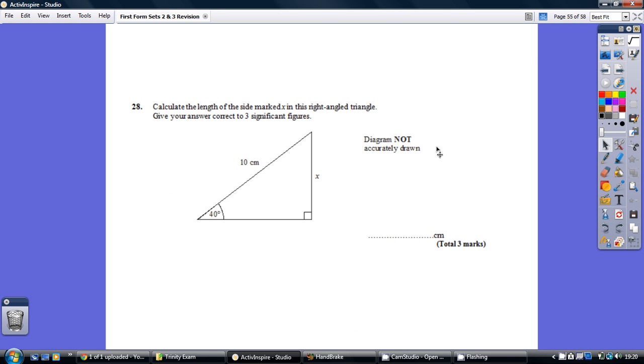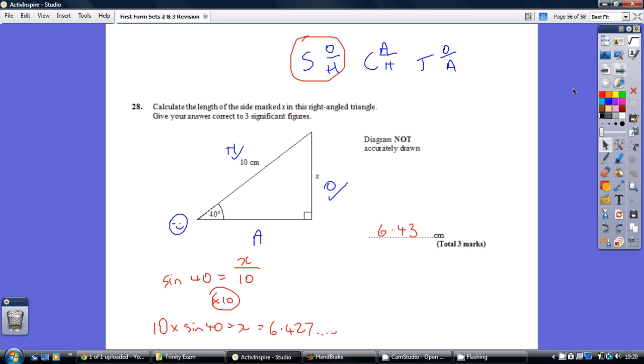Now for question 28, have a go. So this time it's a right-angled triangle but there are angles involved. Look, see, there's 40 degrees. So this is a SOHCAHTOA question.